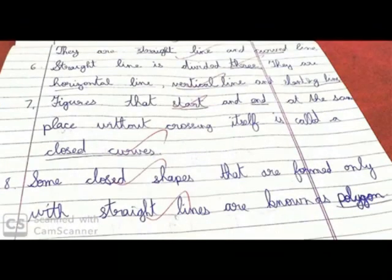Straight length is divided into three types: horizontal length, vertical length, and slanting length. A figure that starts and ends at the same place without crossing itself is called a closed curve.